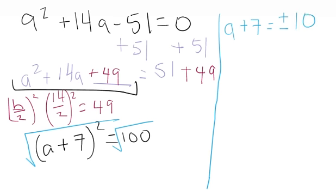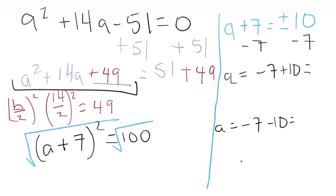Now, from this point, this is where we break it down by subtracting 7 from both sides. And we get a is going to equal negative 7 plus 10, and a is going to equal negative 7 minus 10. And so what we get for our final answer is going to be positive 3 for a, and negative 7 and negative 10 make negative 17.